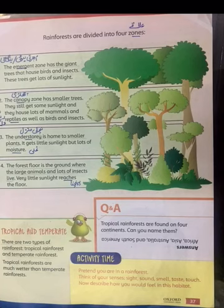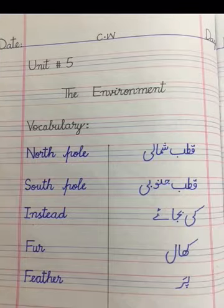The fourth layer is the forest floor, which is the ground level. This is where soil and decomposing matter are found.